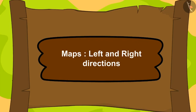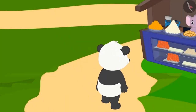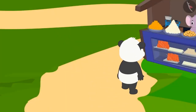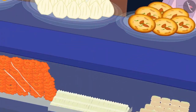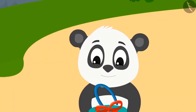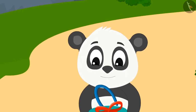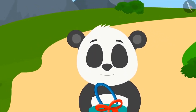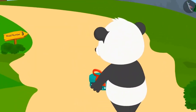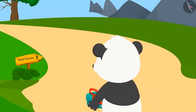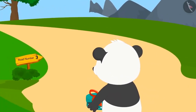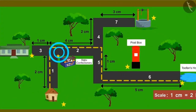In the previous lesson, Golu had bought sweets for Toofan from Appu's confectionery. Now, Golu again started his journey. After going some distance, he saw the board of road number 3 on the road. He was shocked. According to uncle's map, he should have been on road number 2. So, where did Golu make a mistake this time?